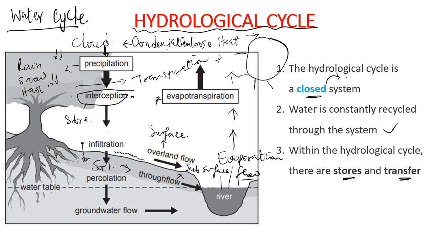The movement of water from the soil into rocks is referred to as percolation. Once water percolates into the rocks, it reaches the groundwater table. Water is still able to move down beneath the rock surface between pervious and impervious rocks — pervious rocks allow water to pass through them. This flow beneath that point is called groundwater flow or base flow.